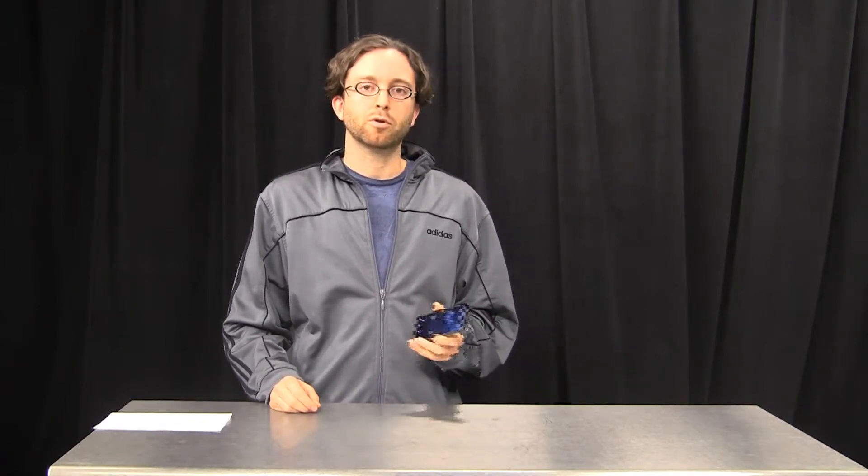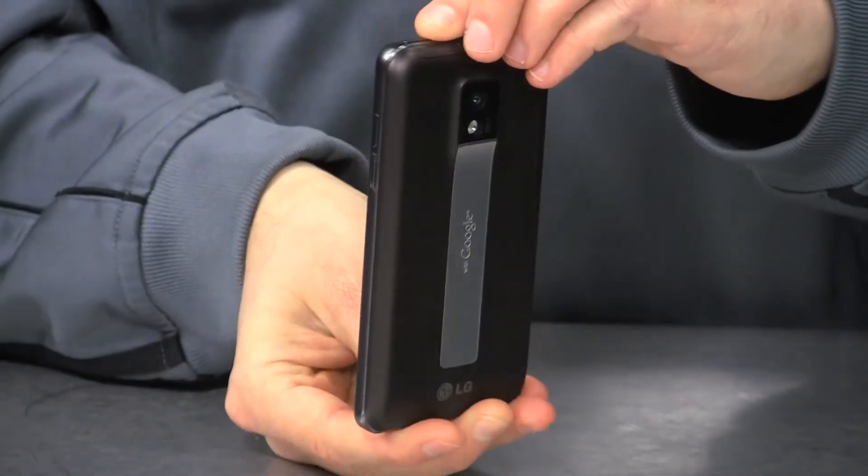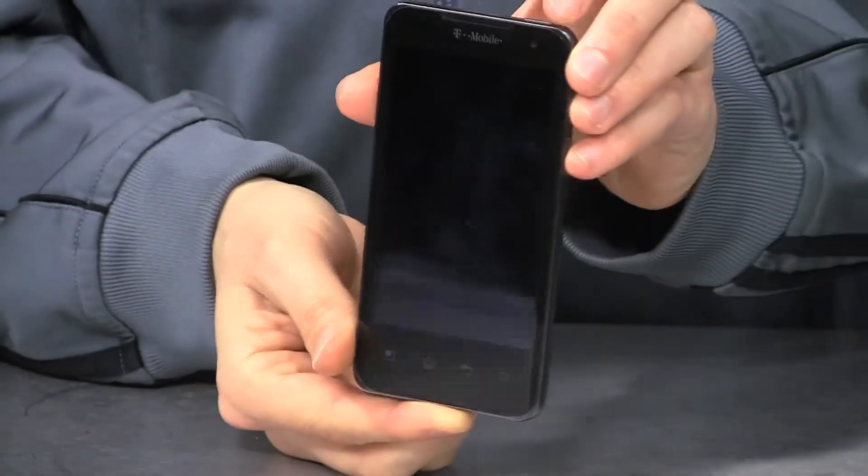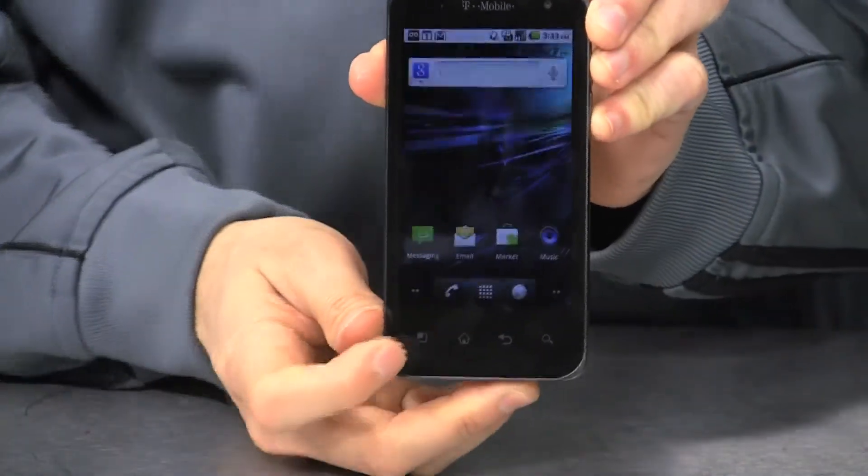It's also the first T-Mobile phone with a dual-core processor. Specifically, that's the NVIDIA Tegra 2 processor, which is dual-core 1 GHz.